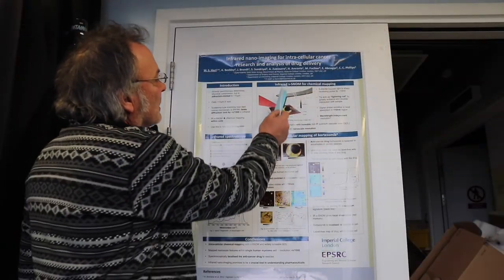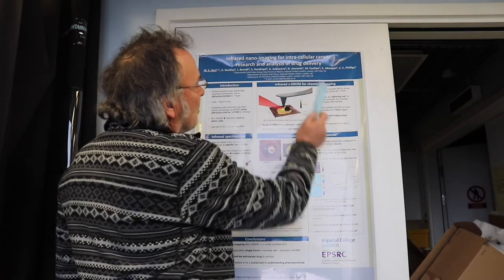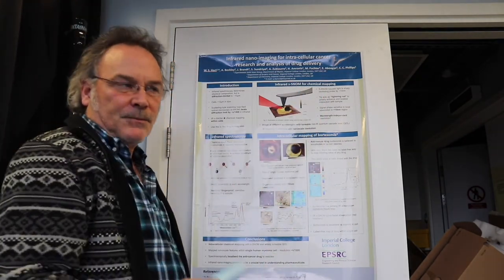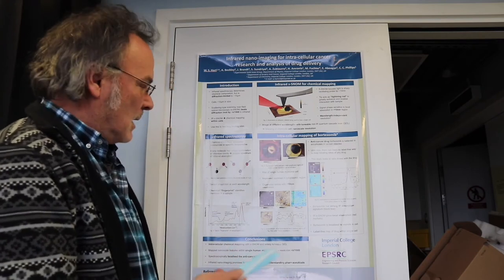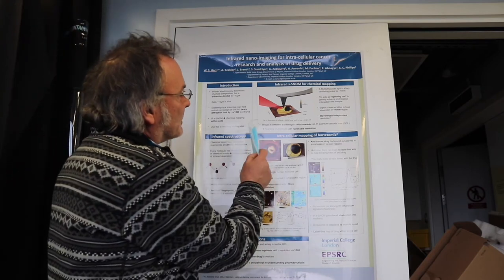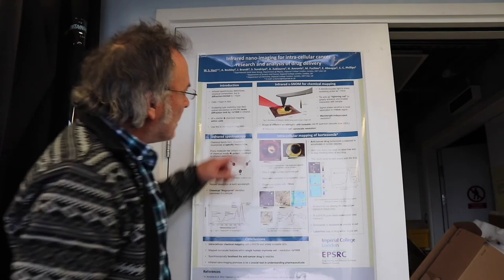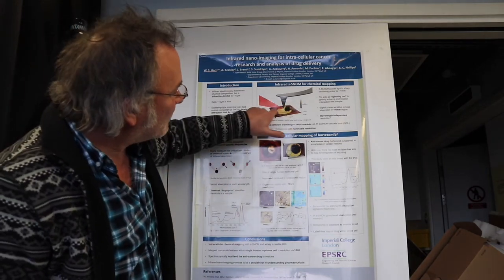Okay, this is the technique we're using. We're calling it S-SNOM. It was developed for looking at microscopic transistors in semiconductors, but we've developed a way of looking at cells with it. You have an extremely sharp tip here, and you drag it over the section of the cell.